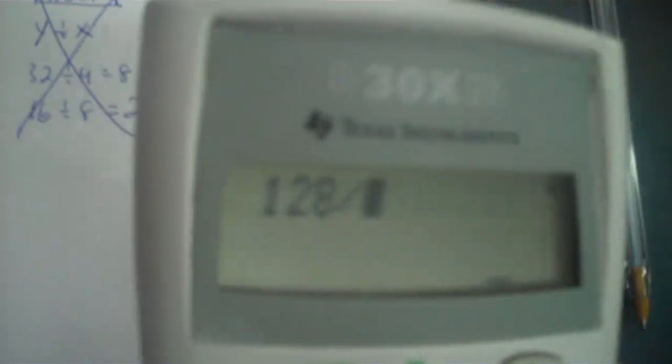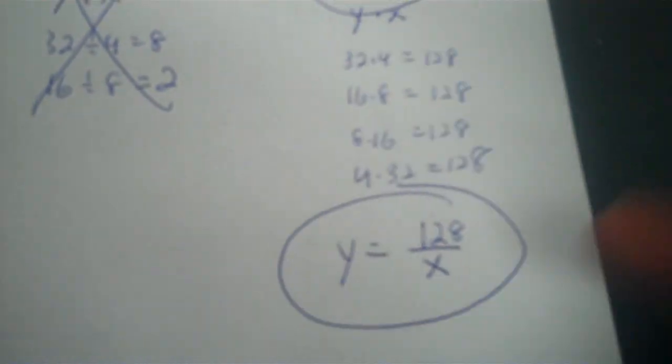Because you see, if I put 4 in for x, 128 divided by 4, 32. If I put 8 in for x, 128 divided by 8, 16. Put 16 divided by x, there's 8. 32, there's 4. So that's the right answer.